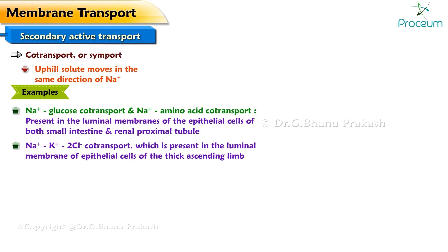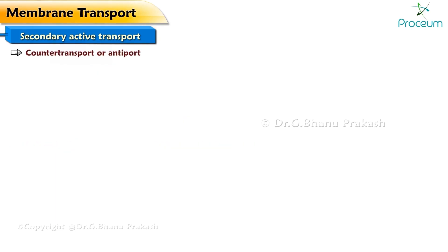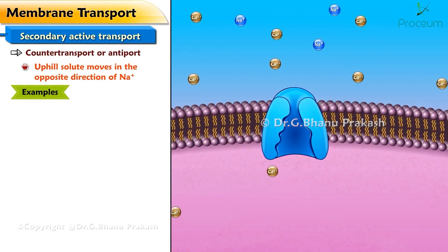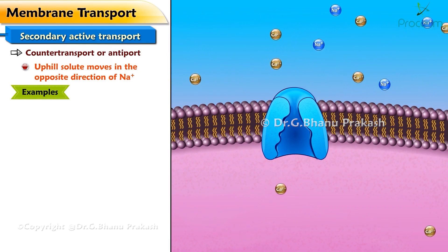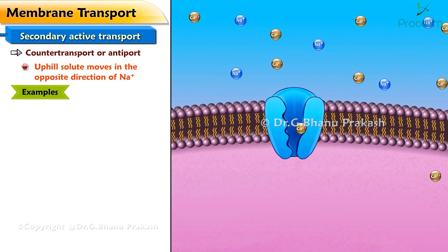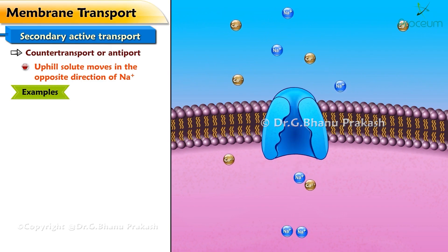The other type of secondary transport is countertransport or antiport, where the uphill solute moves in the opposite direction of Na+. An example is the Na+/Ca2+ countertransporter of heart muscle cells, which moves Ca2+ against its concentration gradient as Na+ moves down its concentration gradient.